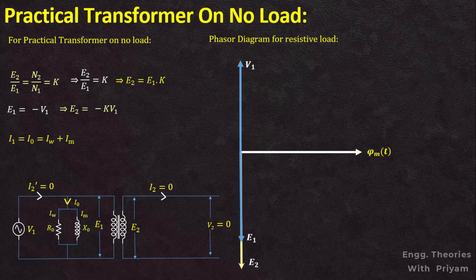The no-load current I₀ has two components, Iw and Im, and the magnitude is √(Iw² + Im²). The magnetizing current Im is a purely inductive current — it lags the alternating supply voltage V1 by 90 degrees and is in phase with the reference flux φm. It is very small in magnitude, denoted as Im = I₀ sin φ₀. The loss component Iw is a purely resistive current — it is in phase with V1 and in phase quadrature with reference flux φm, denoted as Iw = I₀ cos φ₀. The vector sum of these two components gives I₀.